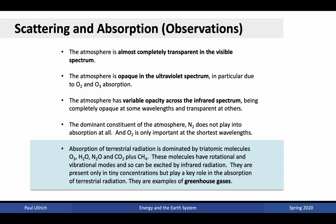Absorption of terrestrial radiation is dominated by triatomic molecules: specifically ozone, water vapor, nitrous oxide, carbon dioxide, and methane. These molecules have rotational and vibrational modes, which allow them to be excited by infrared radiation. Although these gases are only present in tiny concentrations, they play a key role in the absorption of terrestrial radiation and are key examples of greenhouse gases. We'll get into this in more detail in the next lecture on the chemistry of the Earth's atmosphere.